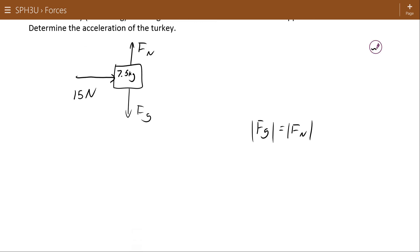So if F_N and F_G cancel each other, then when I add all the forces on this object with the vector addition, my net force is simply going to be equal to 15 Newtons. And if you want, you can put that in the positive x direction.